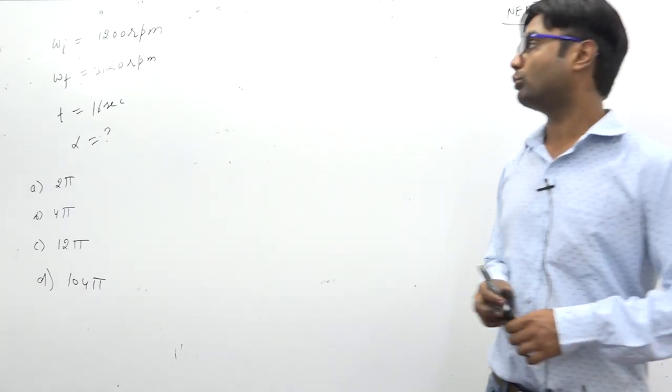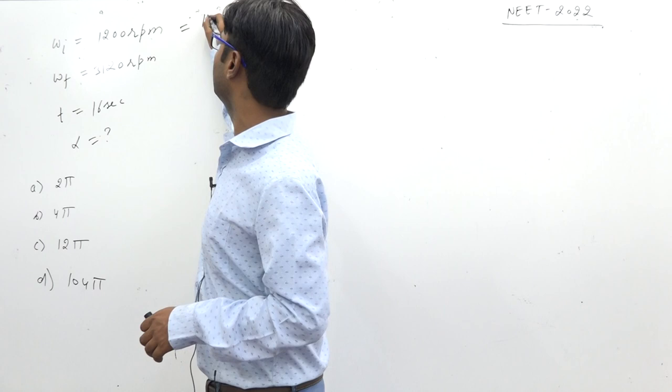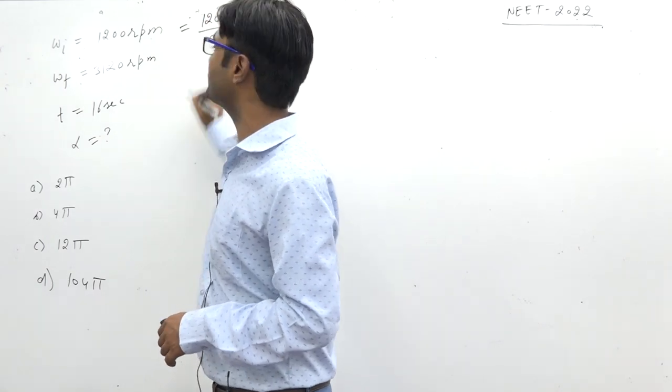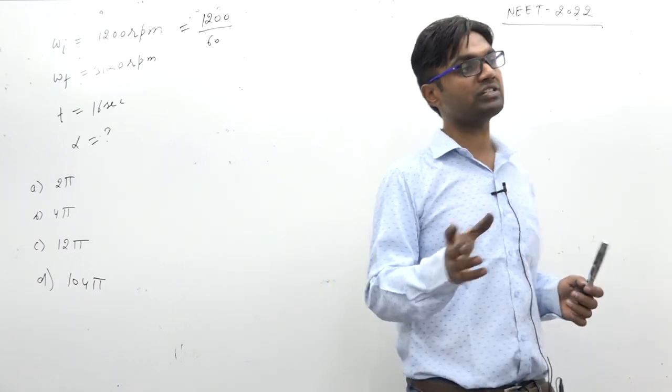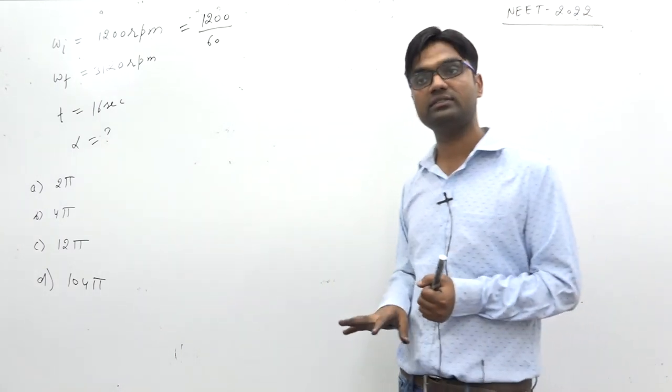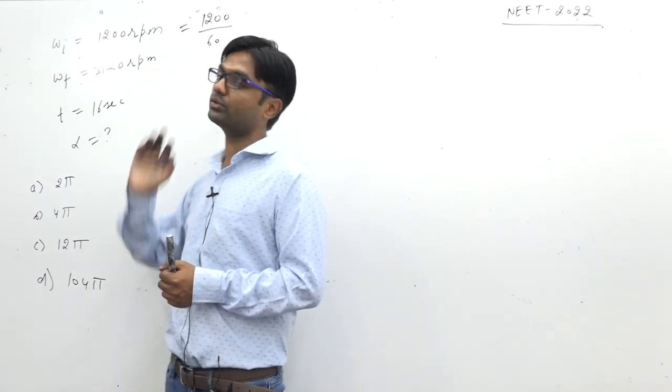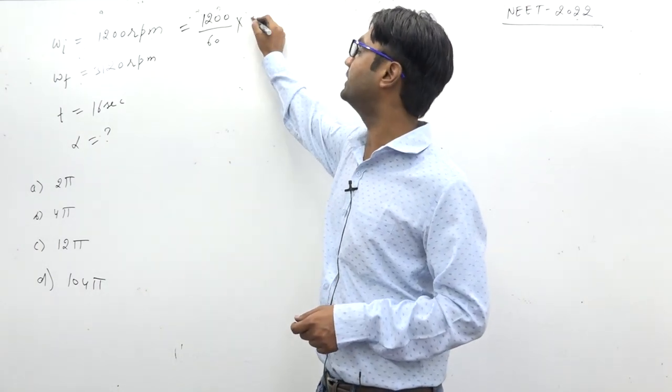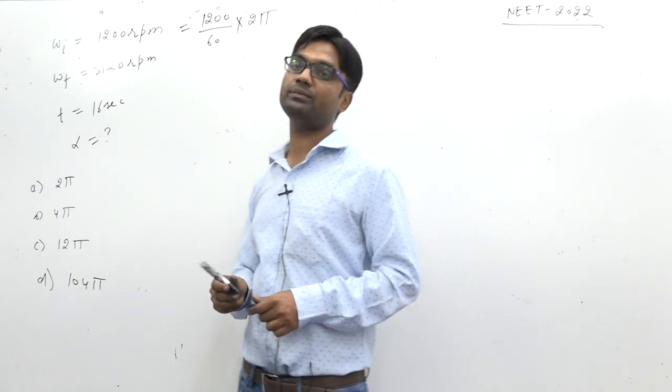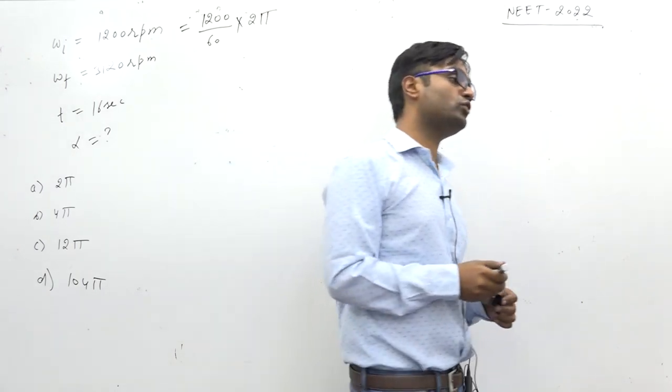So how do we convert it? Look, rotations per minute. First, divide by 60. Sometimes multiply. Because if it is 1200 chakras in 1 minute, in 1 second it will have less chakras. So if it is less, then divide by 60. And multiply by 2π. Why did we multiply by 2π? Because in one rotation there is an angular displacement of 2π.